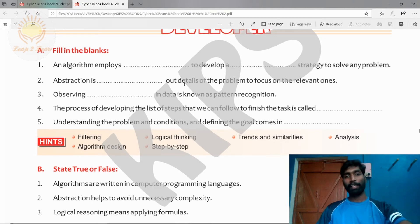Second question: abstraction is a dash out details of the problem to focus on relevant ones. For this answer is filtering. Abstraction is a filtering out details of the problem to focus on the relevant ones.